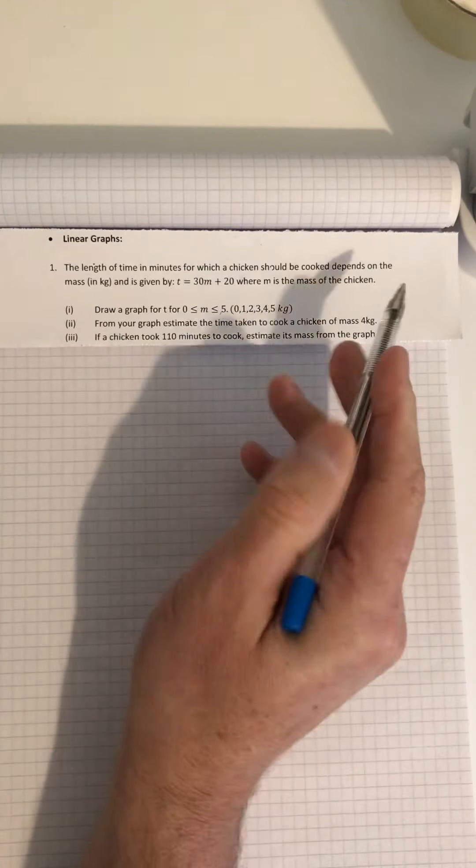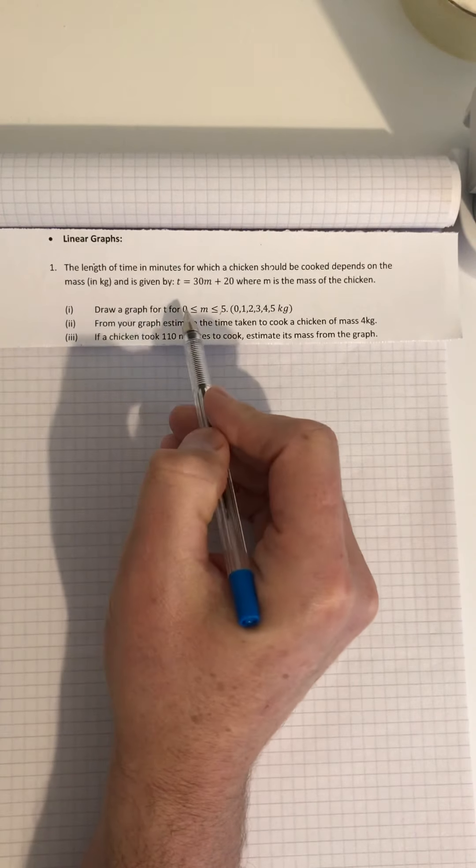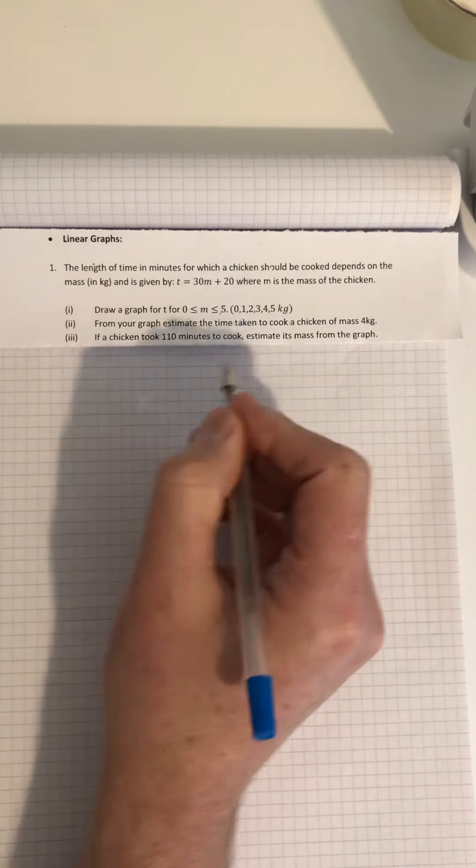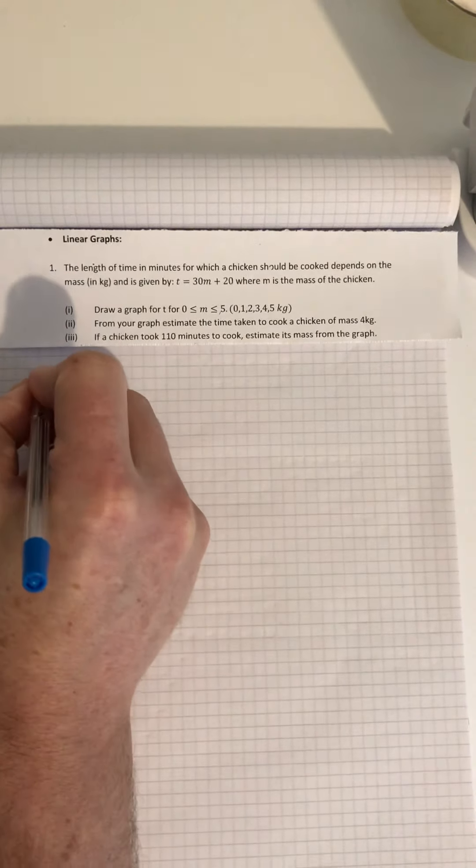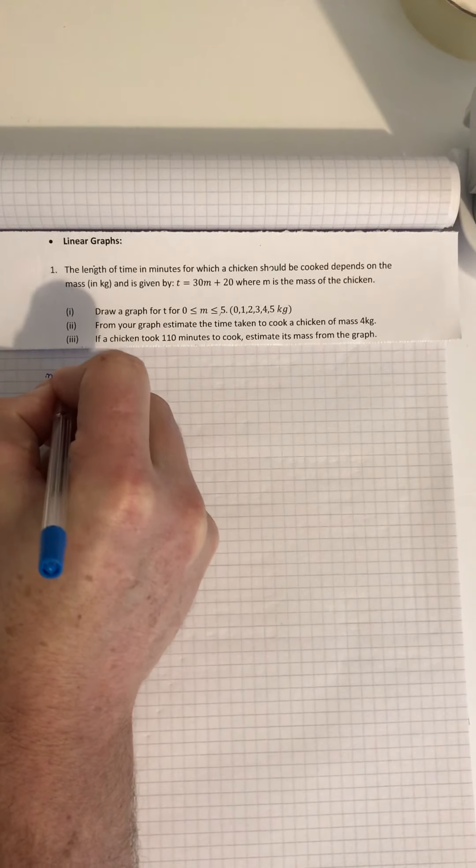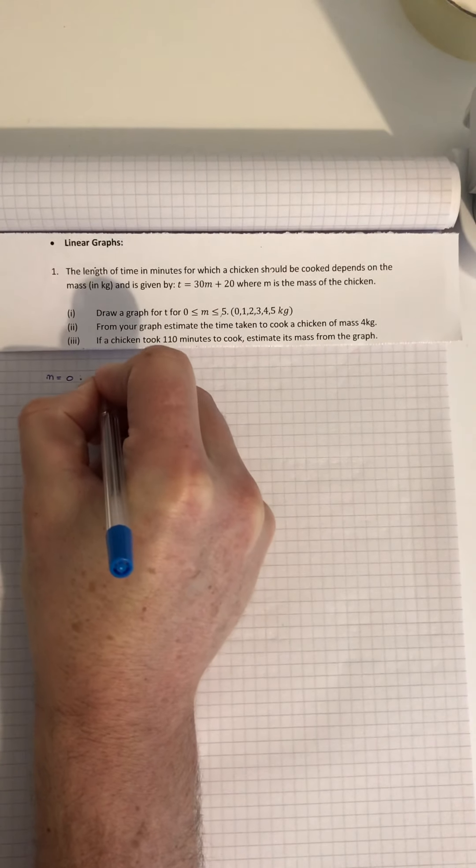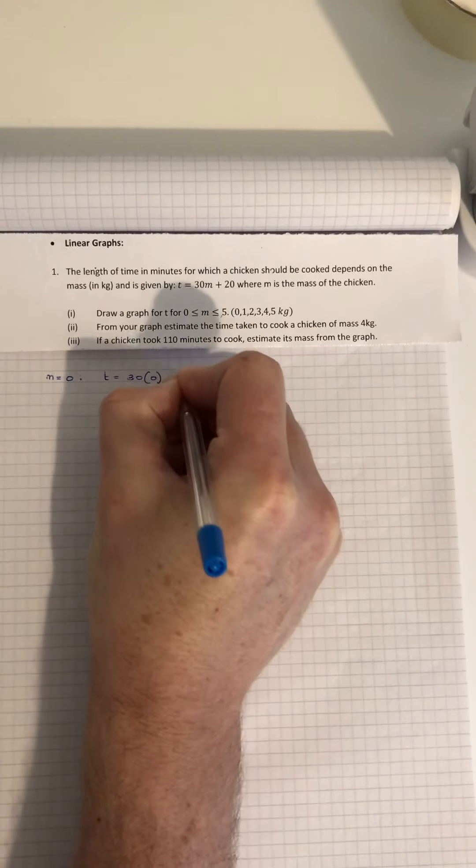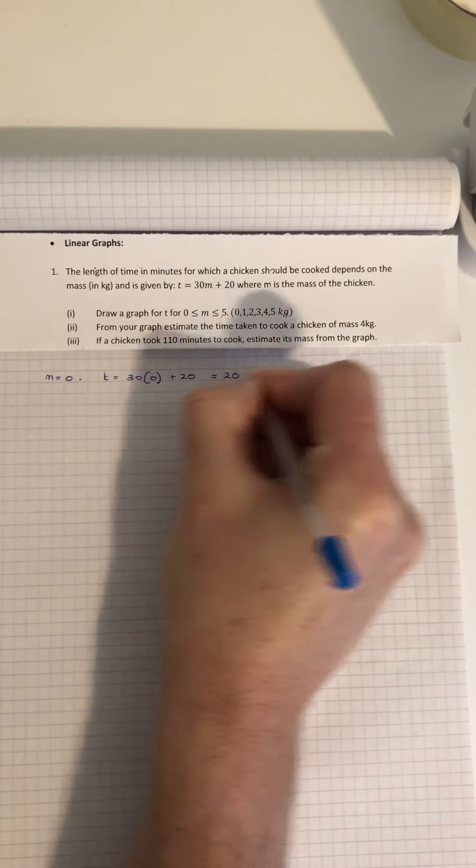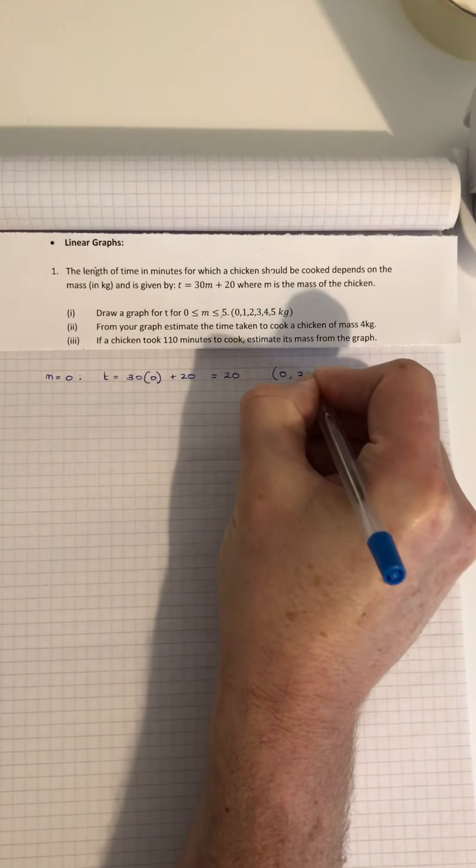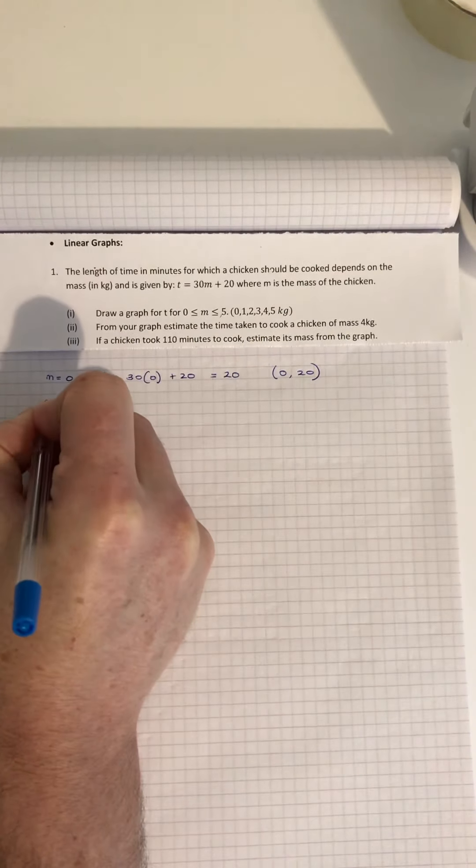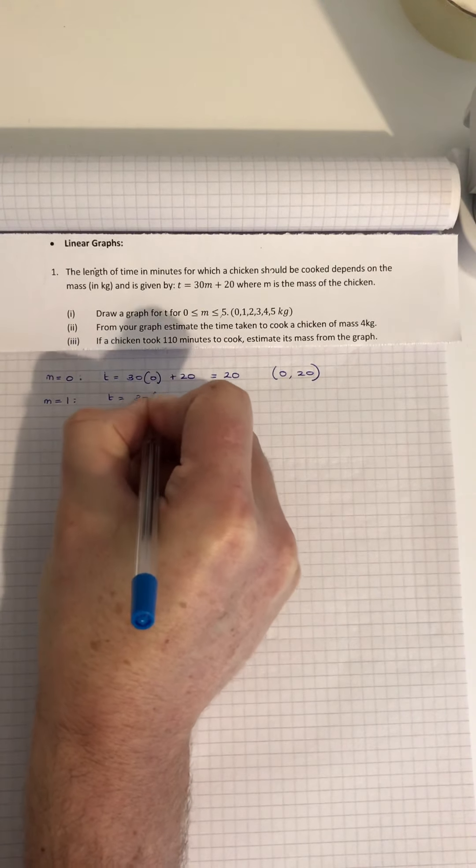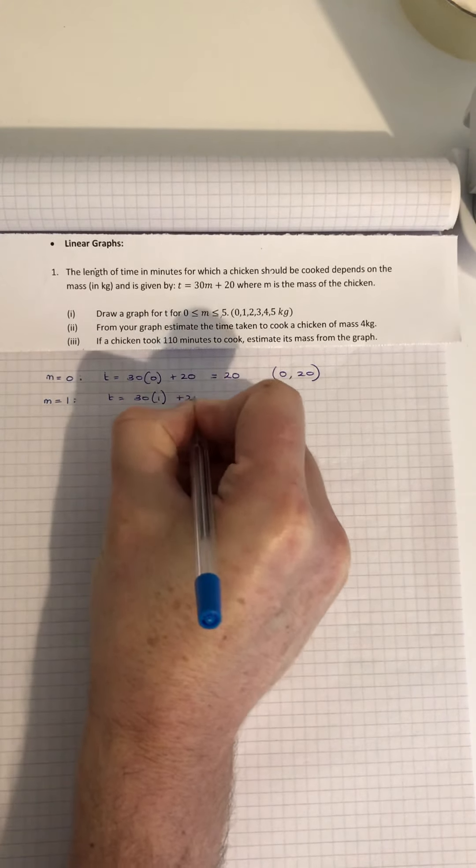Part one is to draw a graph for time from 0 to 5 kilograms. If m equals 0, then time t will be 30 times 0 plus 20, which is 20, so (0, 20). If m is 1 kilogram, the time taken would be 30 times 1 plus 20, which is 50 - so 50 minutes for a 1 kg chicken. If m is 2, time taken is 30 times 2...